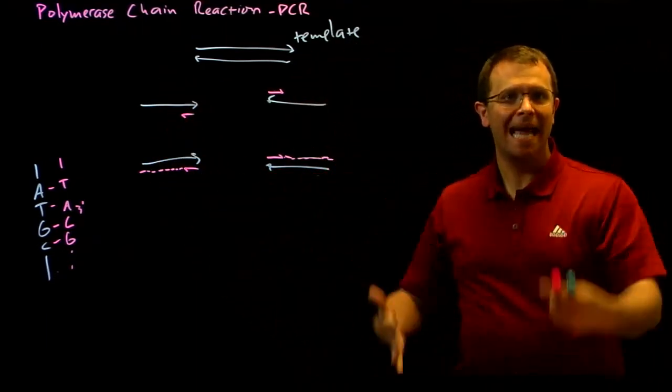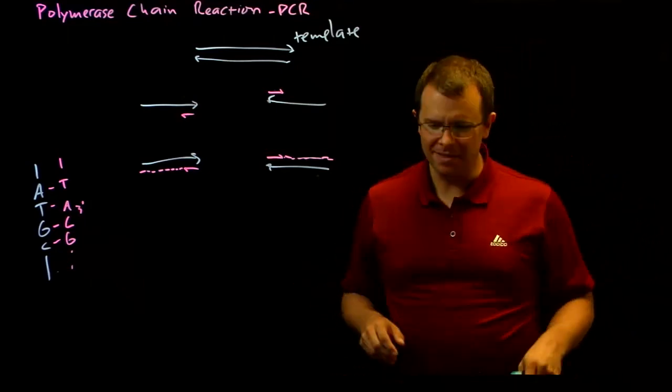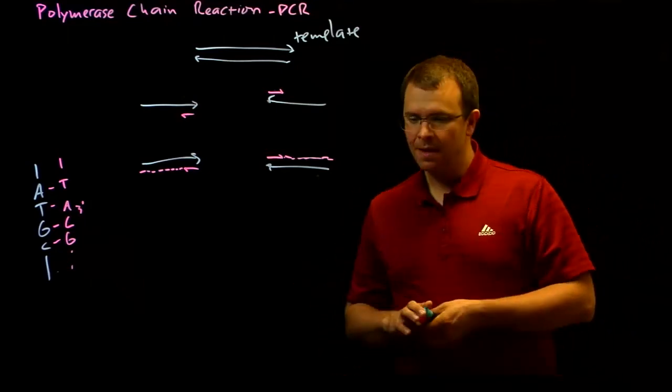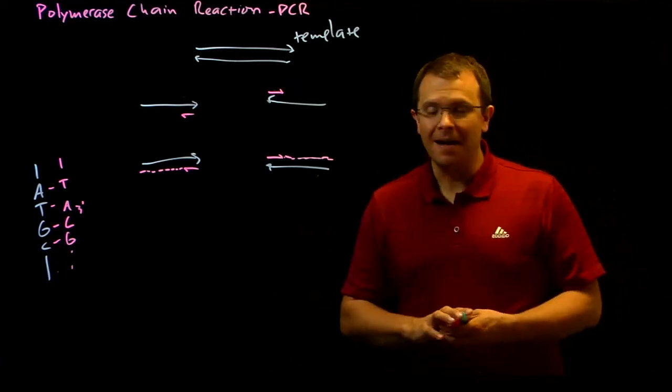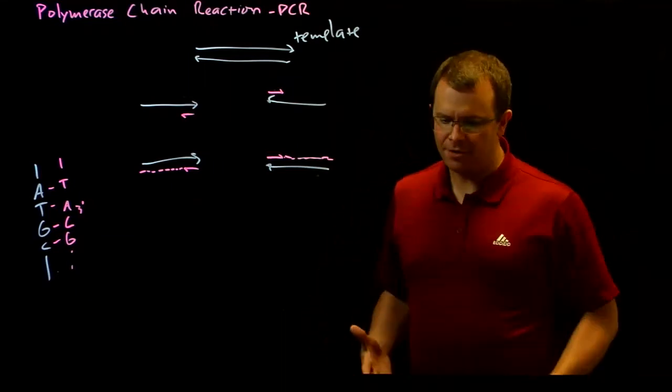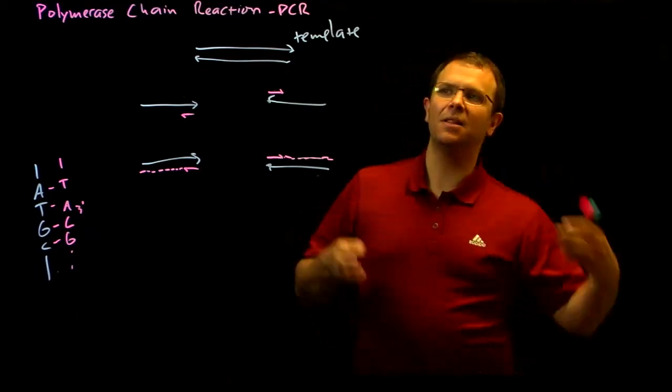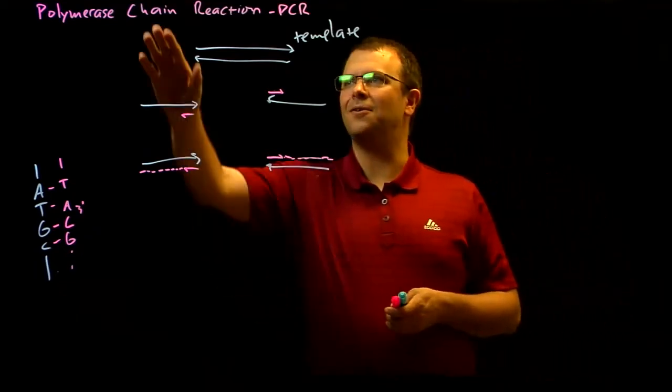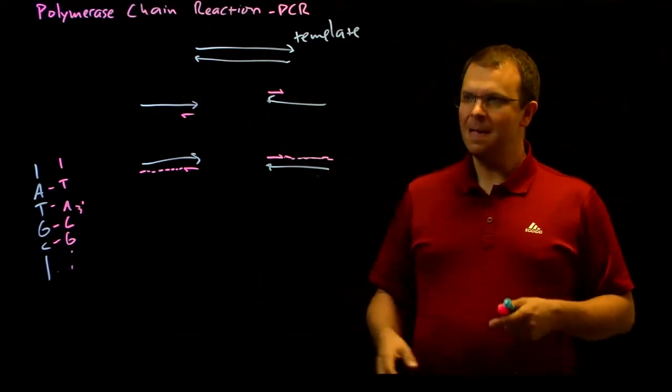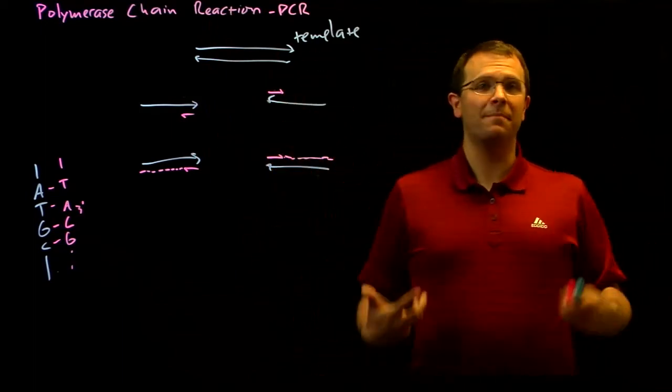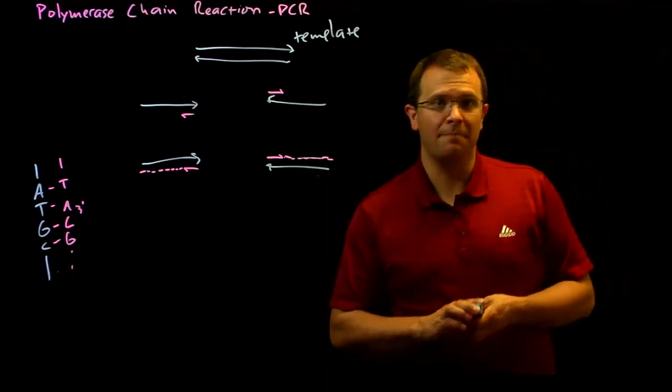Assuming it happens perfectly, it never really does, but it's pretty close. One molecule becomes two, becomes four, becomes eight, becomes 16, etc. And after 30 or 40 cycles, I've gone from a very small amount of DNA to a very large amount. That's why this is called a chain reaction. It's an exponential growth in the amount of DNA that I'm copying, basically until I run out of materials to copy it with.